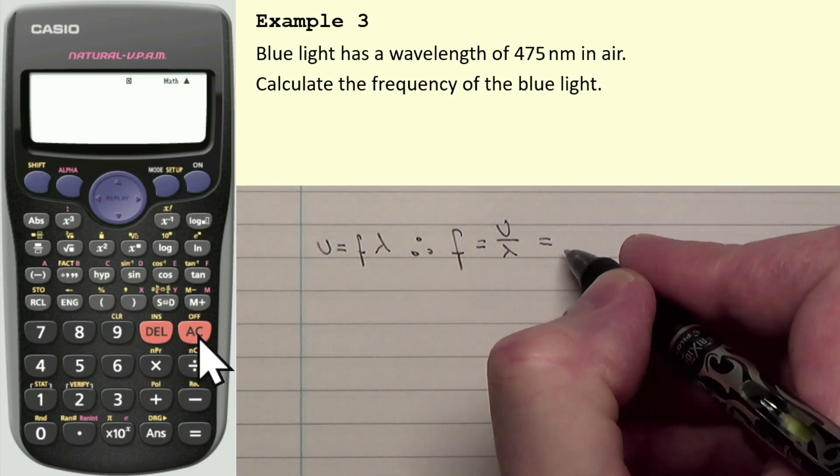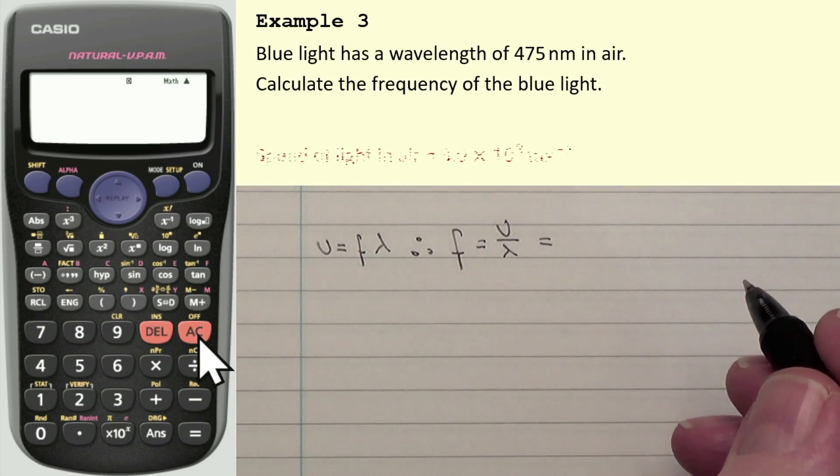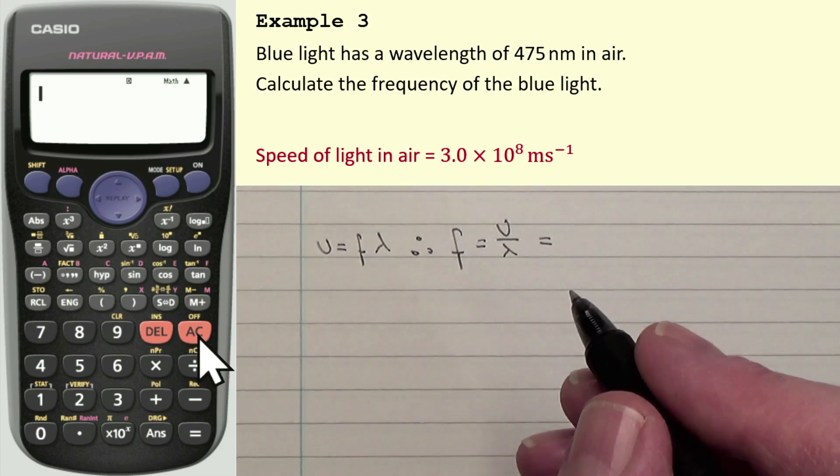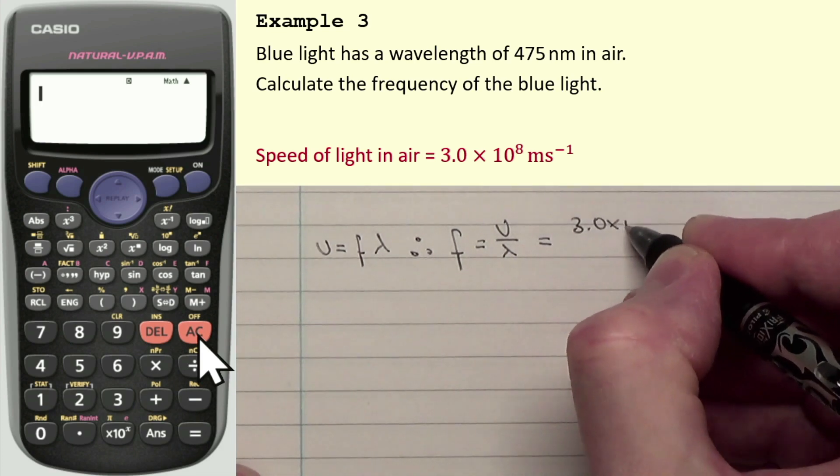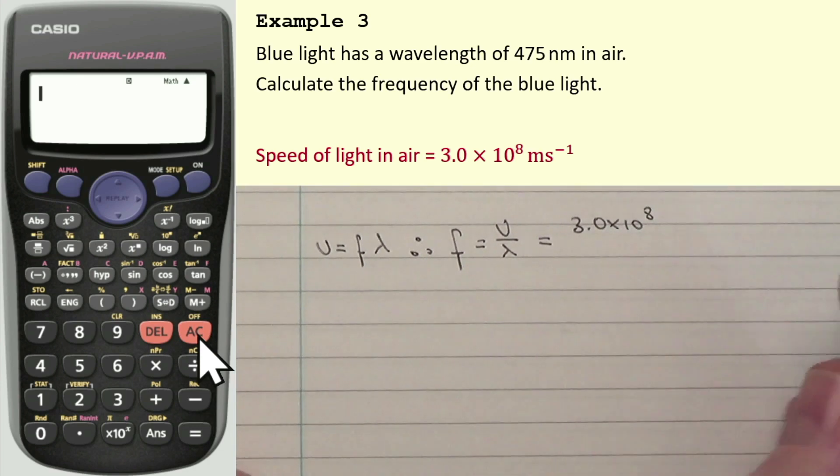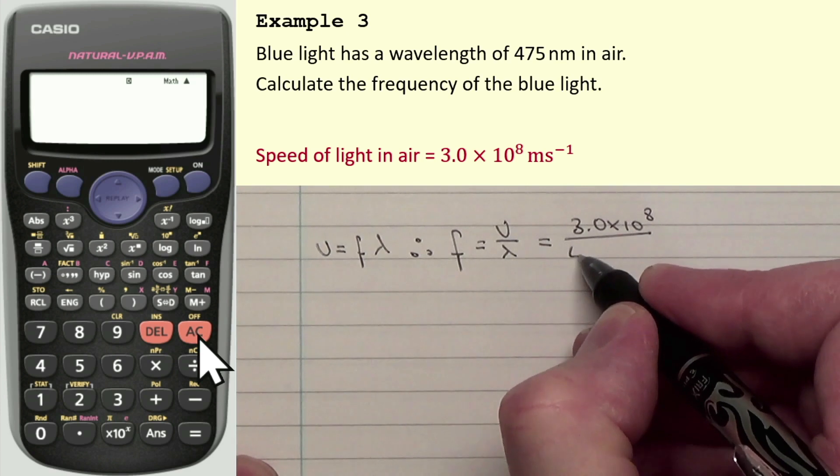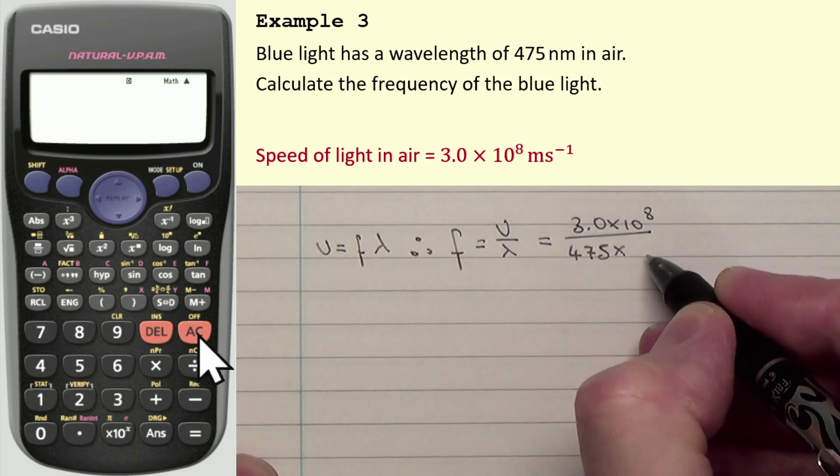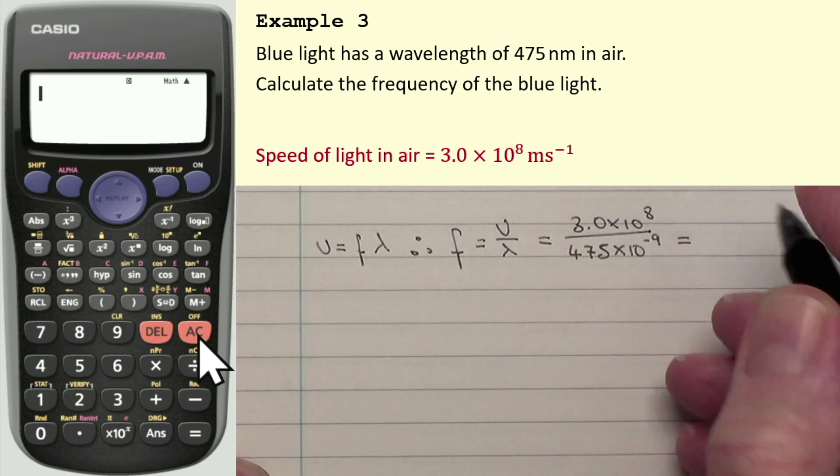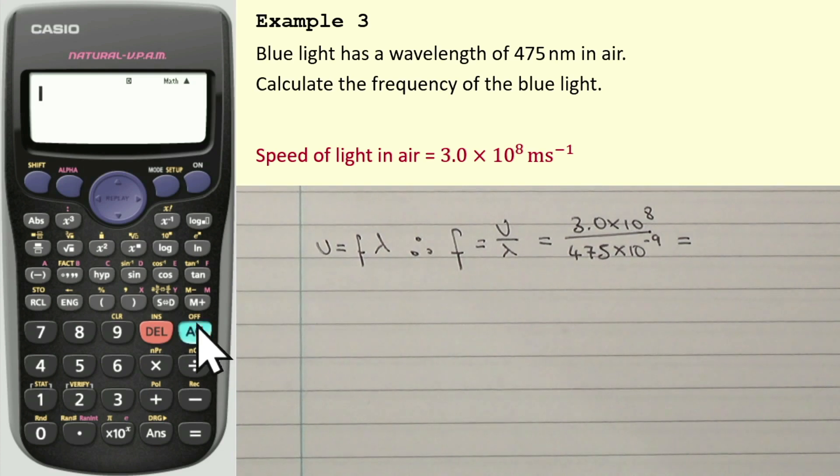It's F is equal to V over lambda. But, the V we don't know yet. In fact, that is the speed of light in air, which you'll find in the data sheets at the start of the exam. So, that's 3.0 times 10 to the power of 8. We'll need to use that times 10 to the power of button to enter that into a calculator. And, lambda is the wavelength, which is 475. And, hopefully, you remember that nano is times 10 to the minus 9. This is going to give a very large number. So, let's enter that into the calculator. We've got 3.0 times 10 to the power of 8, divided by 475, then times 10 to the power of negative 9. So, the negative button's up here on the left. Negative 9. And, that gives us this.